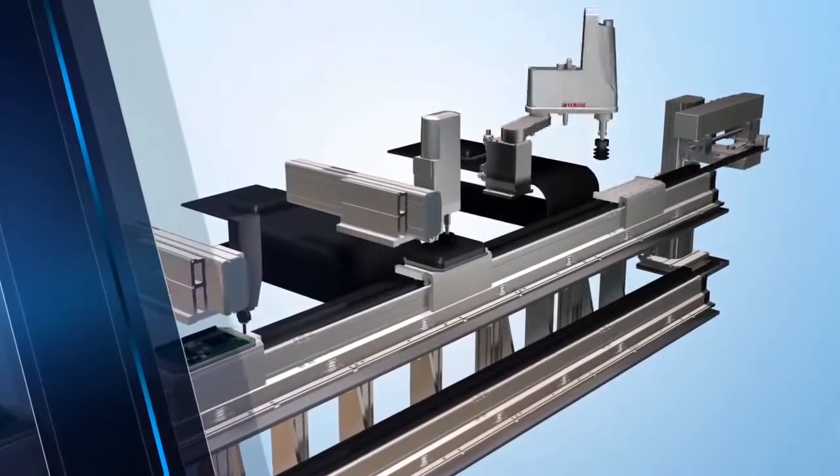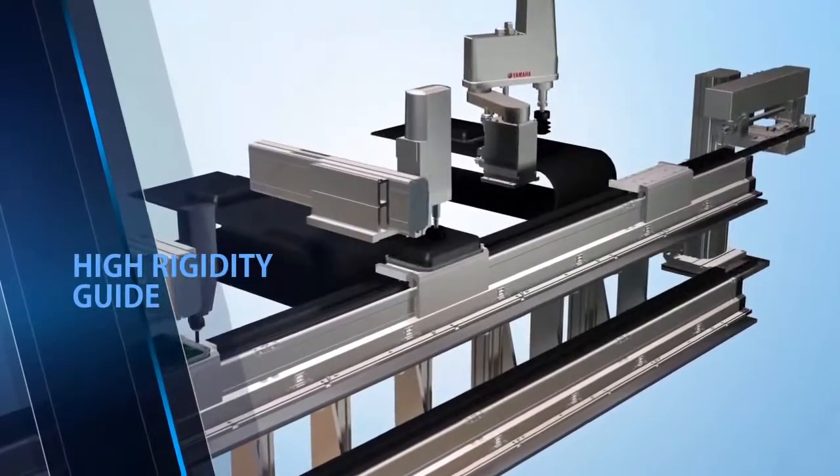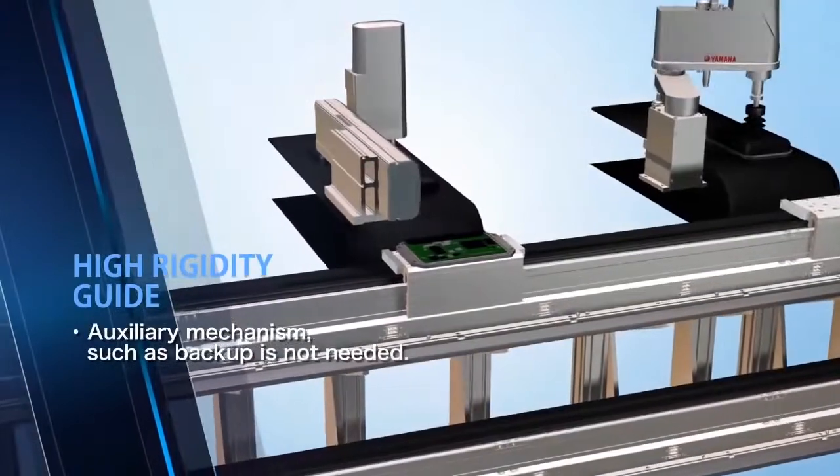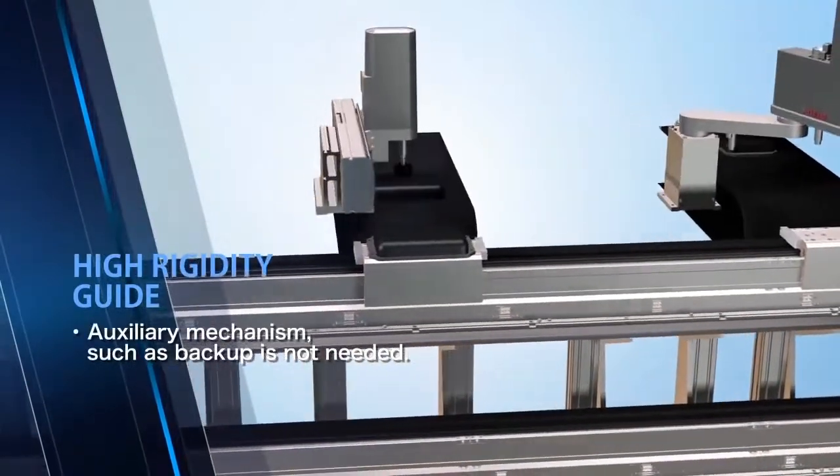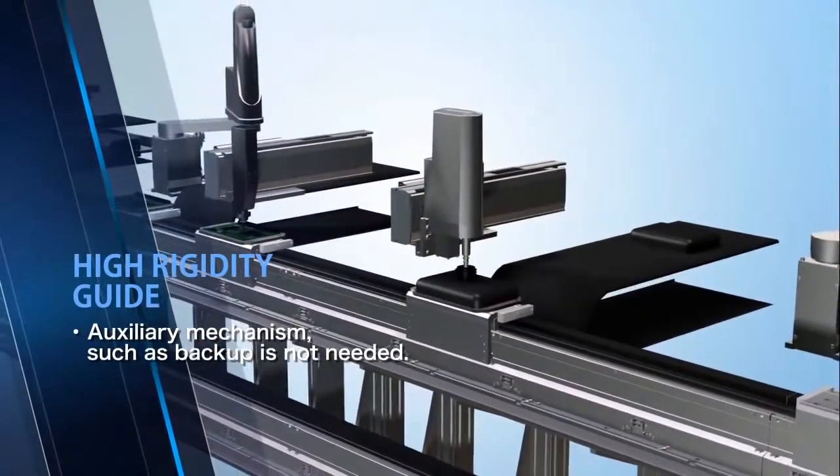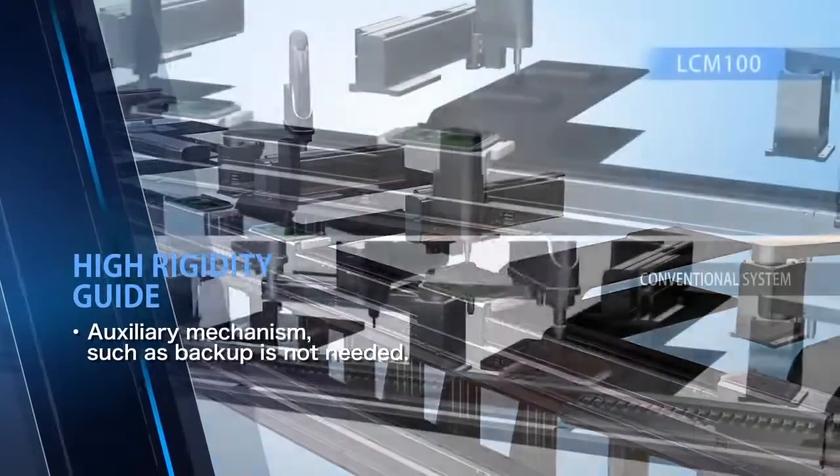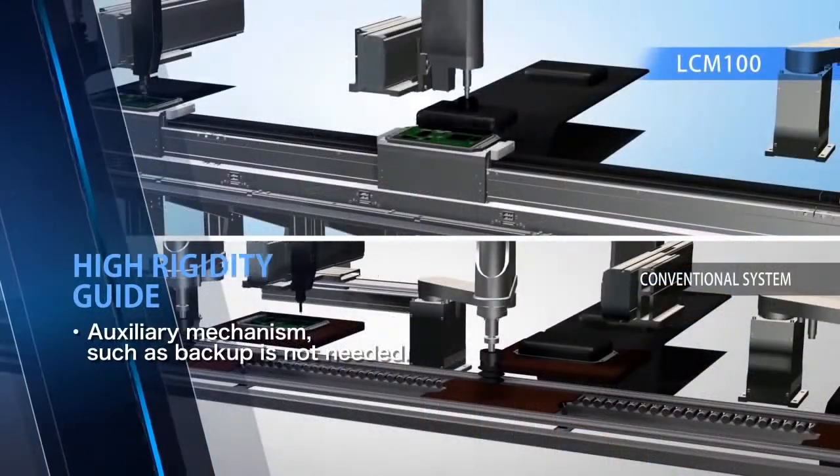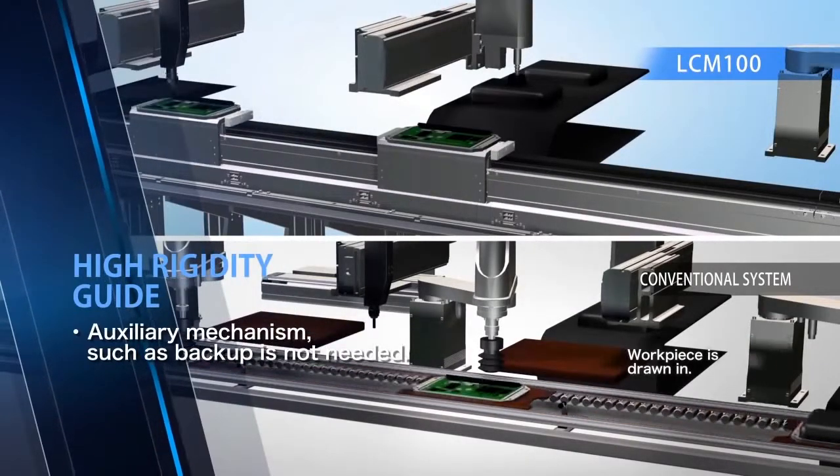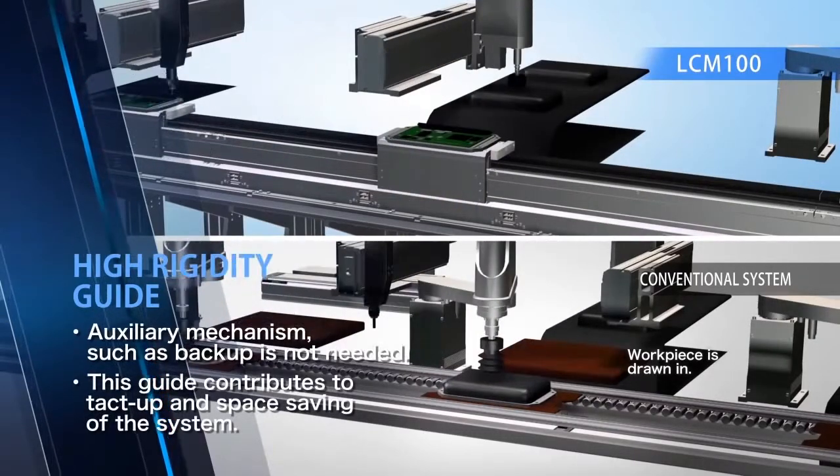Conventional conveyor systems are not designed for assembly. For assembly work, conventional conveyor systems require external support guides for relocation of parts from a conveyor. LCM 100 maintains high rigidity by supporting itself with a retainer guide. This allows assembly work directly on the LCM so that cycle time can be reduced.